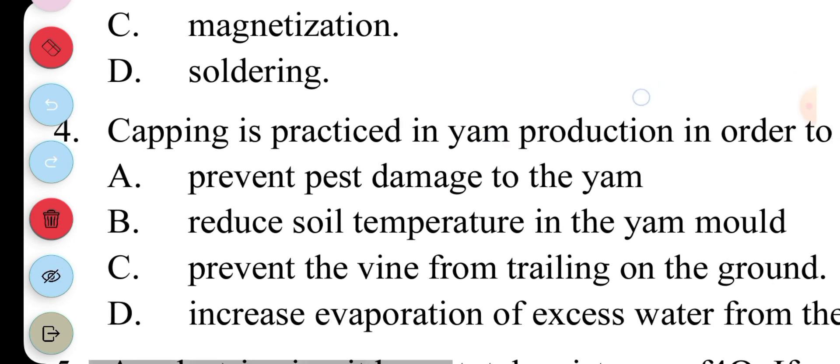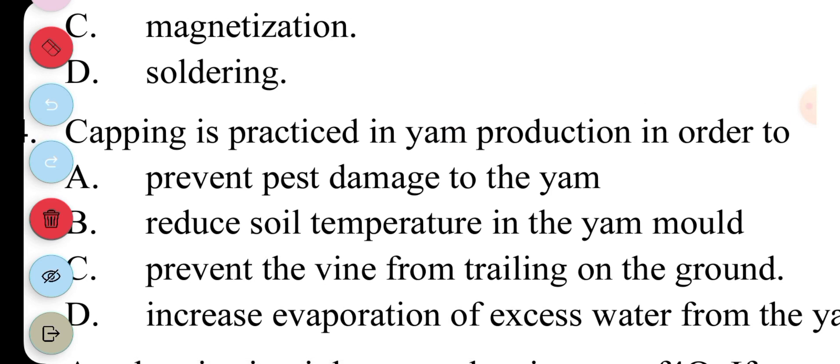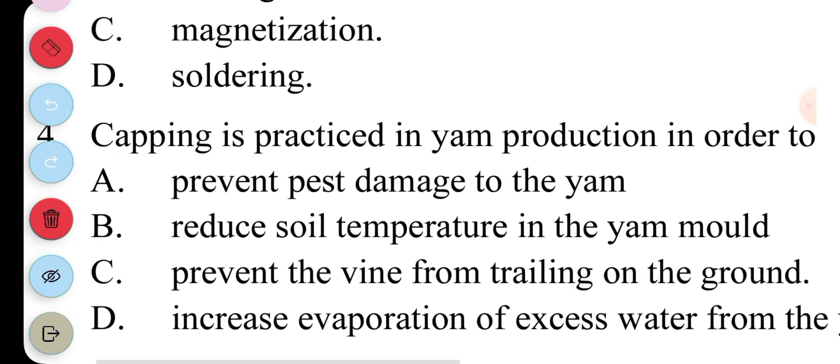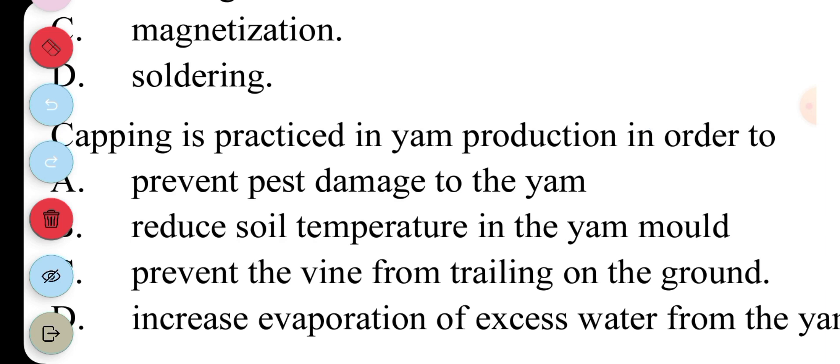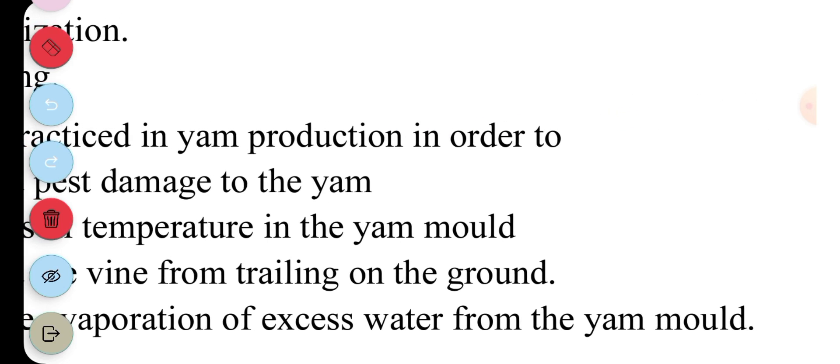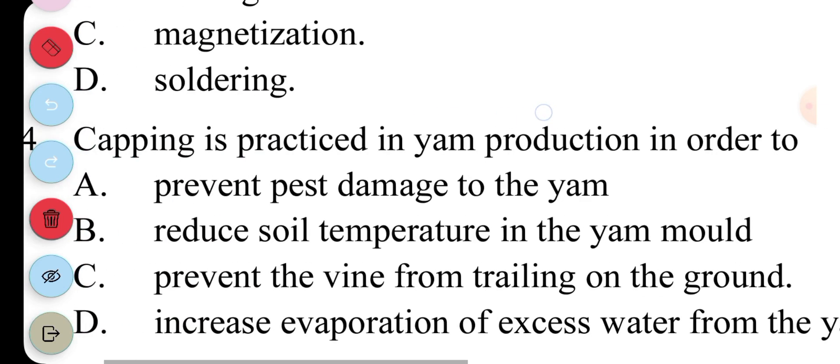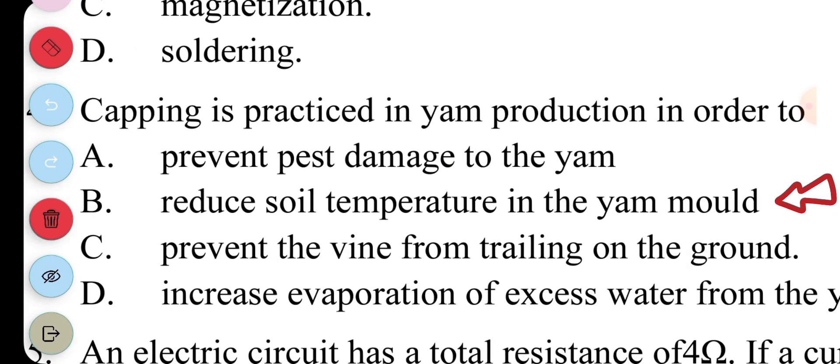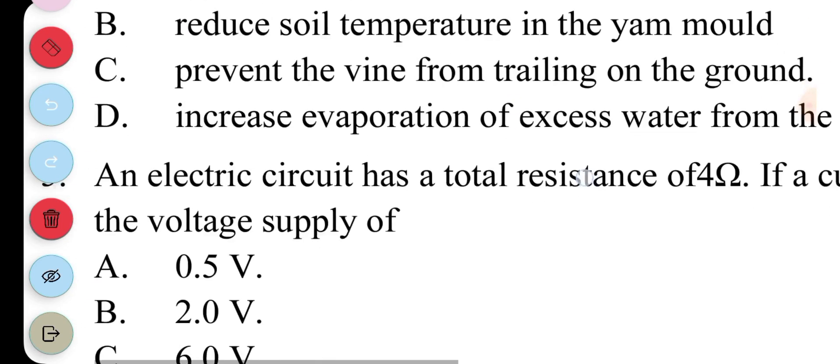Question four, capping is practiced in yam production in order to: A, prevent pest damage to yam; B, reduce soil temperature in yam mound. It's supposed to be yam mound, M-O-U-N-D, not mold. C, prevents the vine from trailing on the ground; D, increase evaporation of excess water from the yam mold. So that's capping for you.